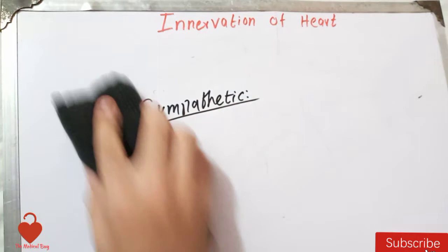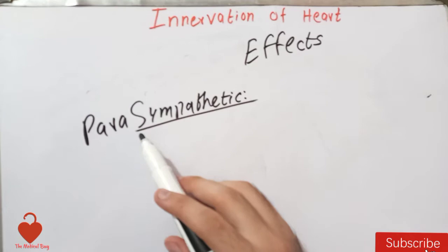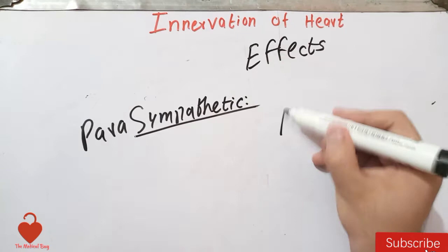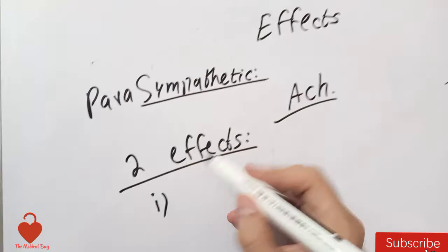Now let's talk about the effects of the sympathetics and parasympathetics on the heart. Let's first talk about the effects of the parasympathetic on the heart. The neurotransmitter released by the post-synaptic endings of the parasympathetic neurons innervating the heart is acetylcholine, and this acetylcholine causes two effects. First, it will cause a decrease in the rhythm of the SA node.